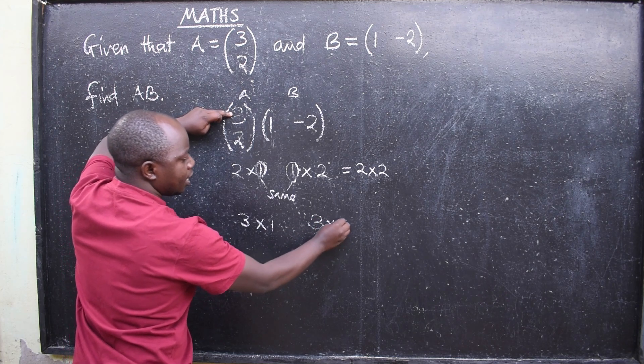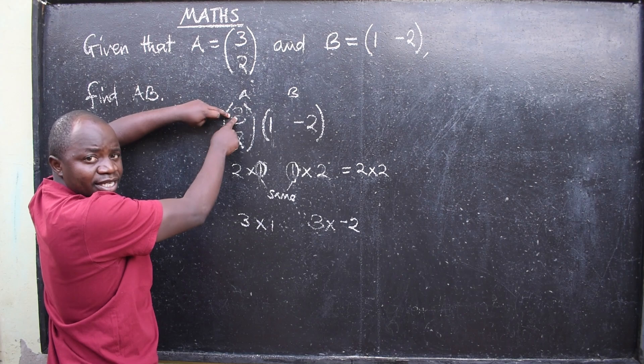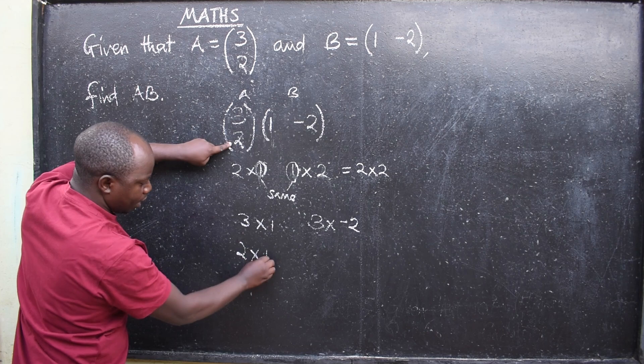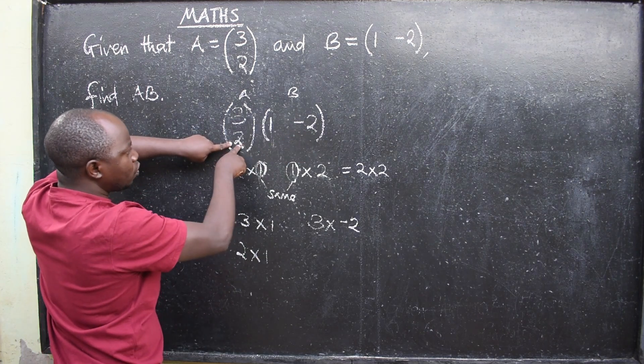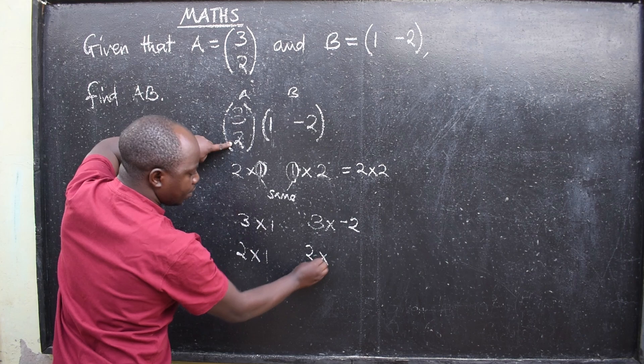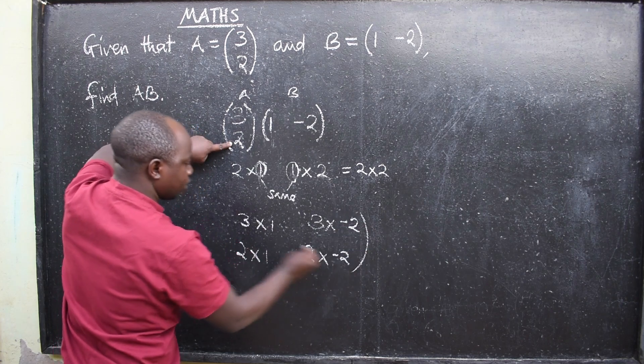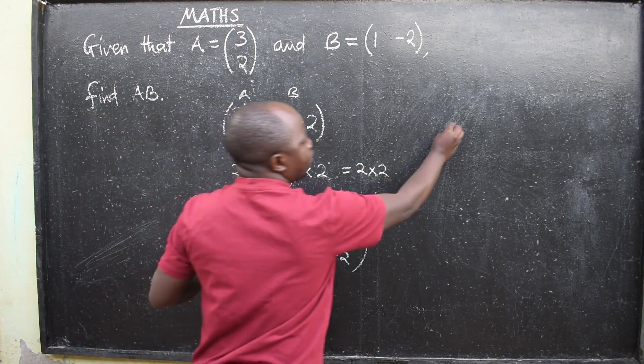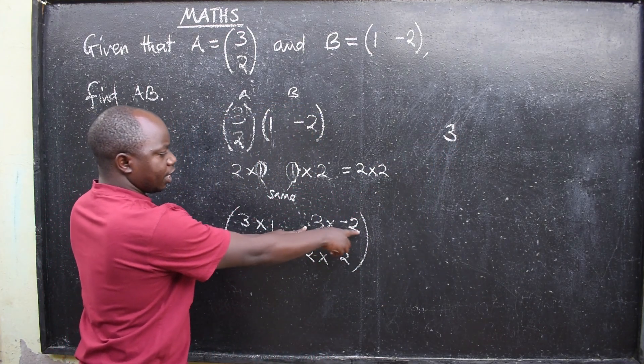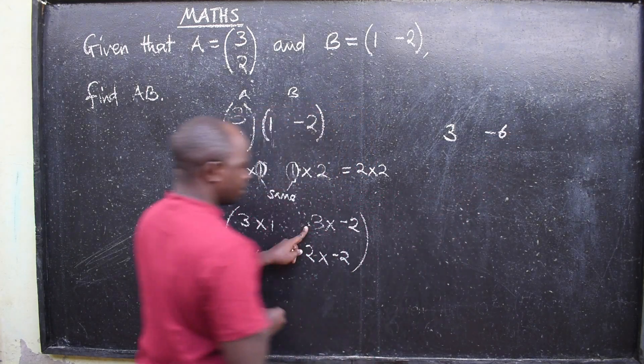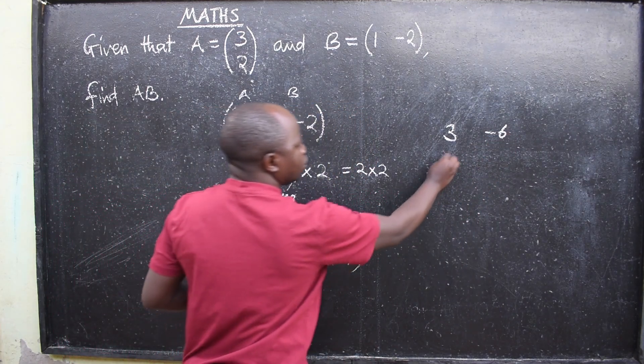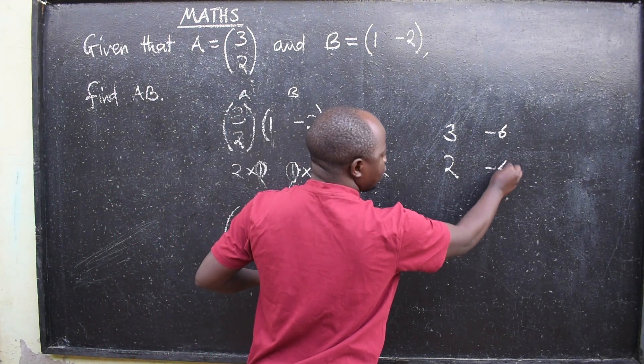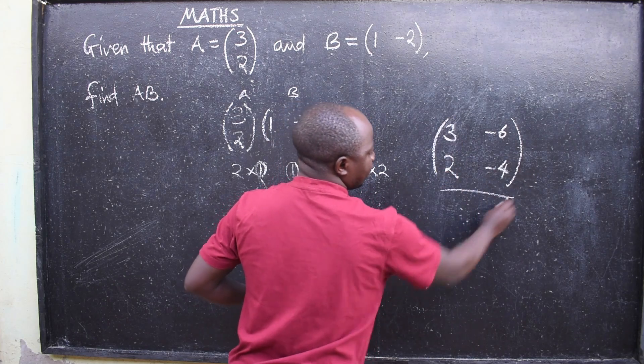So we have 3 times negative 2. You are done with this, you come to this down here: 2 times 1. This side: 2 times negative 2. Then we find the answer: 3 times 1 is 3, 3 times negative 2 is negative 6, 2 times 1 is 2, 2 times negative 2 is negative 4. This is the final answer.